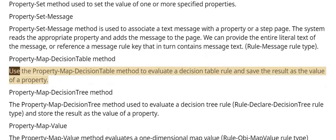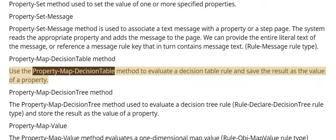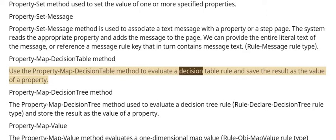Use the Property Map Decision Table method to evaluate a decision table rule and save the result as the value of a property.